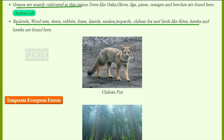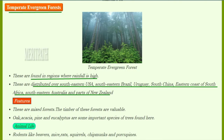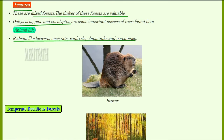Temperate evergreen forests are found in regions of high rainfall, distributed over southeastern USA, southeastern Brazil, Uruguay, south China, eastern coast of South Africa, southeastern Australia, and parts of New Zealand. They are mixed forests with very valuable timber. Trees such as oak, acacia, pine, and eucalyptus are found here. Animals include beavers, mice, rats, squirrels, chipmunks, and porcupines.